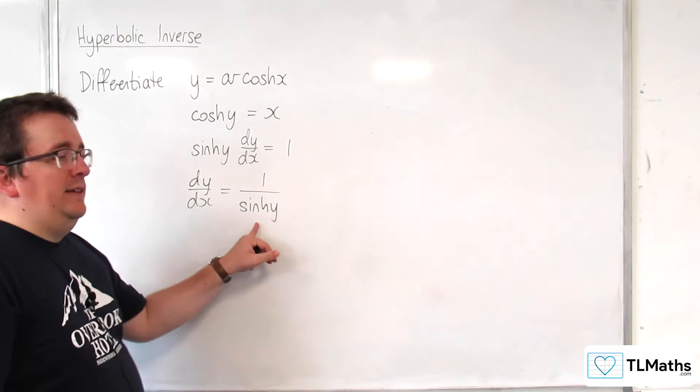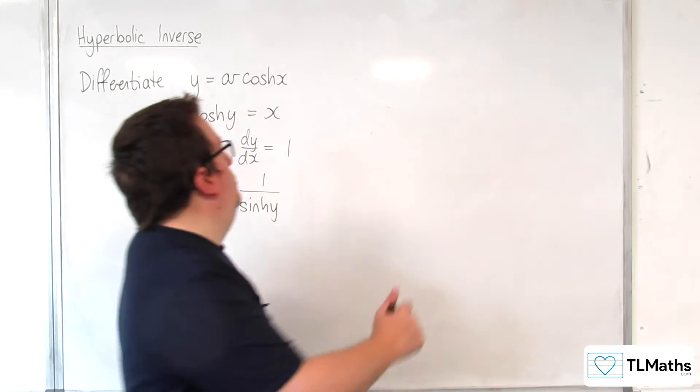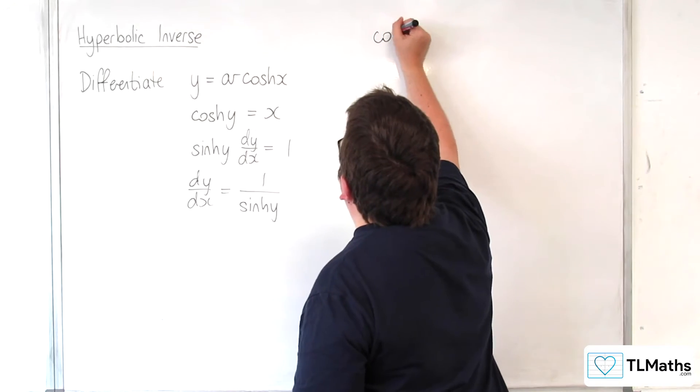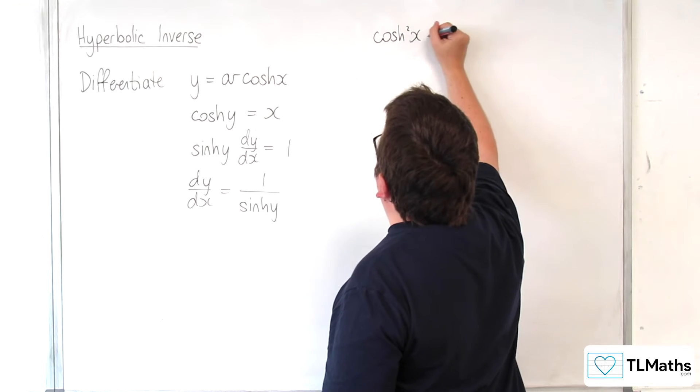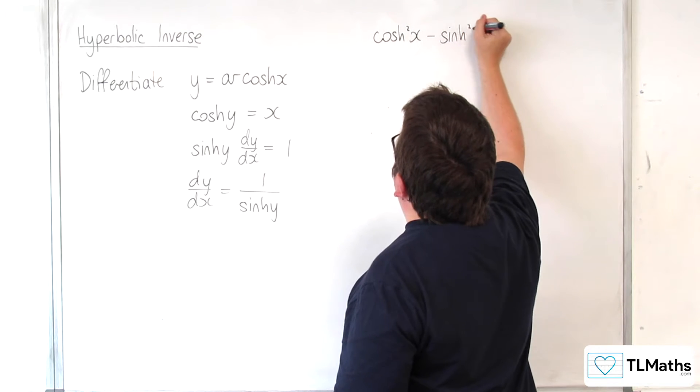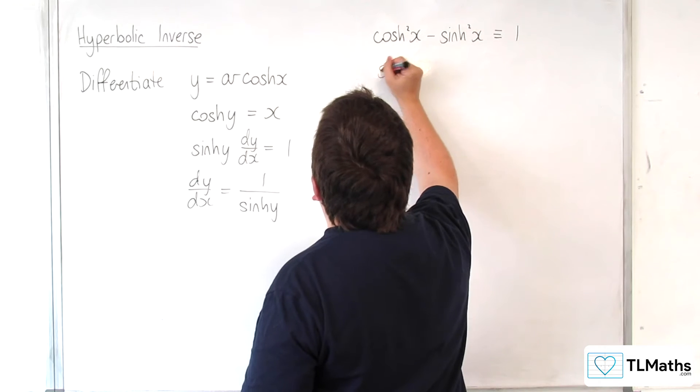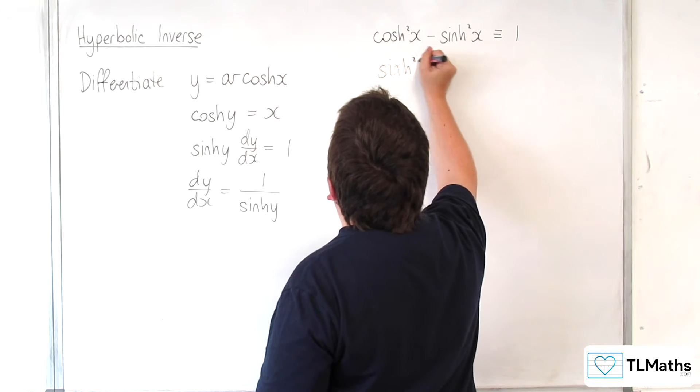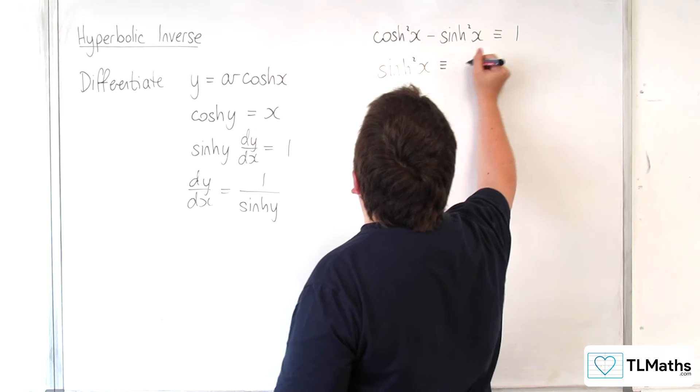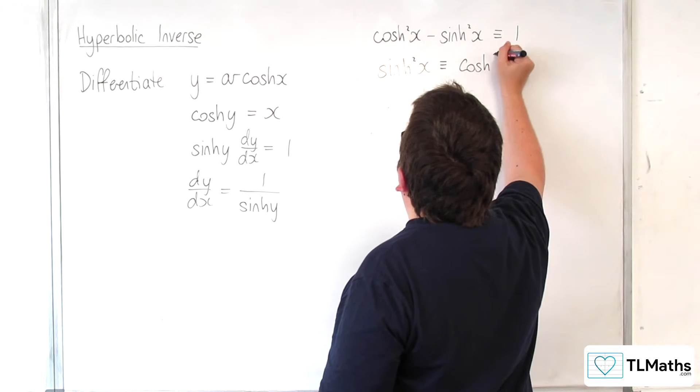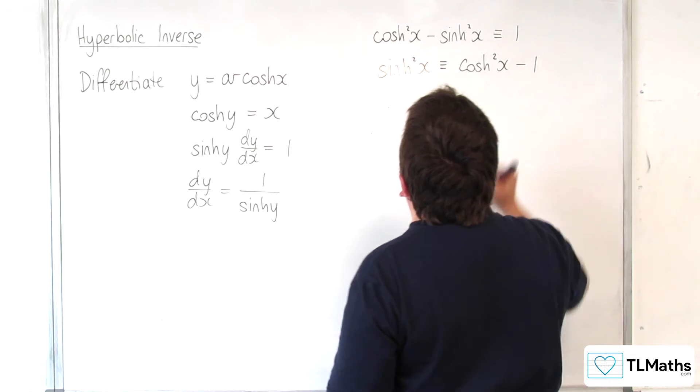Now we want to get this back in terms of x. So we recall the identity cosh squared x take away sinh squared x is equivalent to 1. And we can reorganize that to say sinh squared x is equivalent to cosh squared x take away 1.